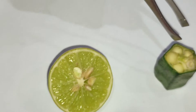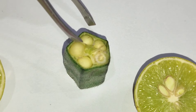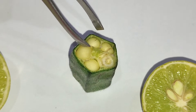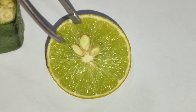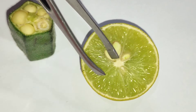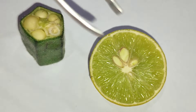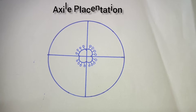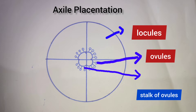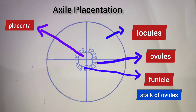A similar example is found in lady's finger, where the seeds — which are mature ovules — are arranged in a multilocular ovary with ovules attached to the axial. Lemon is also a perfect example of axile placentation where ovules are attached in the axial. In the diagram drawn here, the chambers of the ovary are called locules, and the ovules are attached to the placenta via the funicle. This arrangement in the axis is called axile placentation.